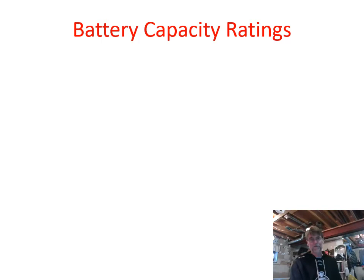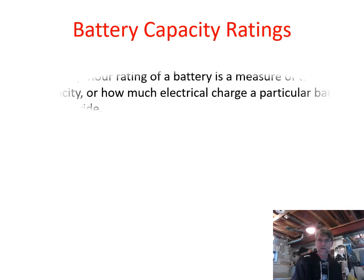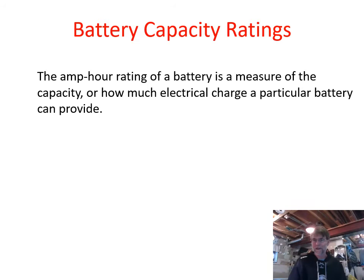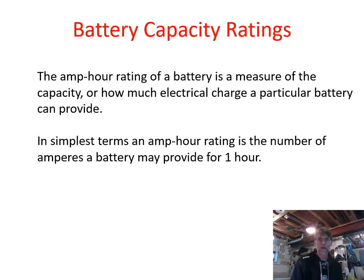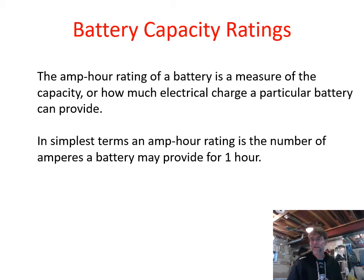Let's talk about capacity rating. In addition to identifying the voltage output of a battery, we also need to talk about its capacity. The term we typically use is the amp-hour rating. In its simplest terms, the amp-hour rating is the number of amps a battery is able to provide for one hour — so if the battery goes from fully charged to fully spent in one hour, how many amps can it push during that period of time?